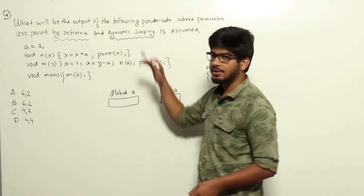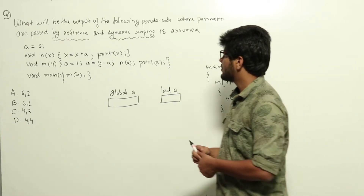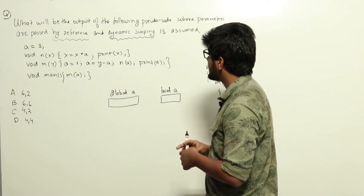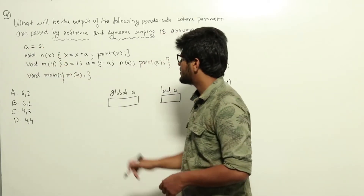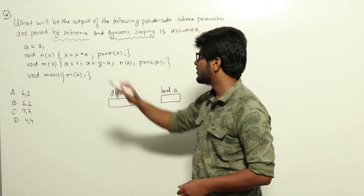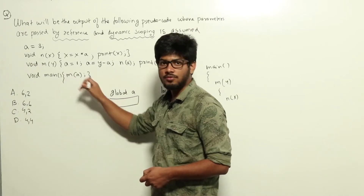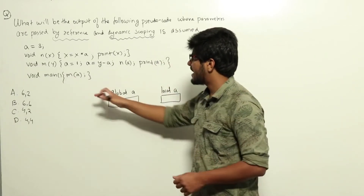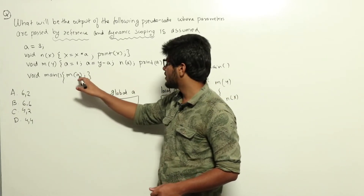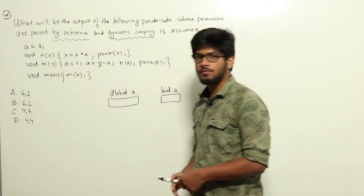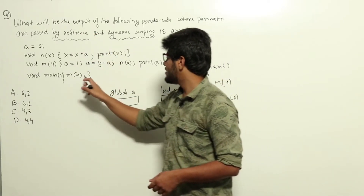This is not a C programming question. The pseudo code uses pass by reference and dynamic scoping. If it was C programming they would have used static scoping. Here we have a global variable a equal to 3. Inside the main function we are calling m of a. Since no other a has been declared so far, this a will be the global a, which is being passed to function void m of y.